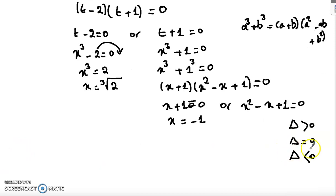So delta equals minus 1 squared minus 4 times 1 times 1, which equals 1 minus 4, equals minus 3, which is smaller than 0. Then this equation has no solution in R.